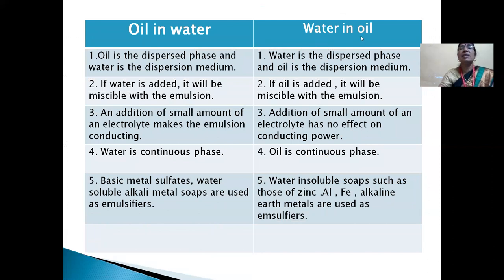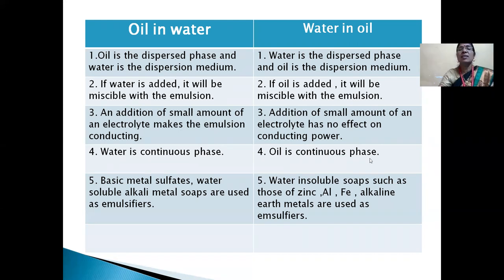Difference between oil-in-water and water-in-oil: In oil-in-water, oil is the dispersed phase and water is the dispersion medium. In water-in-oil, water is the dispersed phase and oil is the dispersion medium. Second difference: in oil-in-water, if water is added it will be miscible with the emulsion. Third, in oil-in-water, addition of a small amount of electrolyte makes the emulsion conducting; in water-in-oil, addition of a small amount of electrolyte has no effect on conducting power. Fourth difference: in oil-in-water, water is the continuous phase; in water-in-oil, oil is the continuous phase.